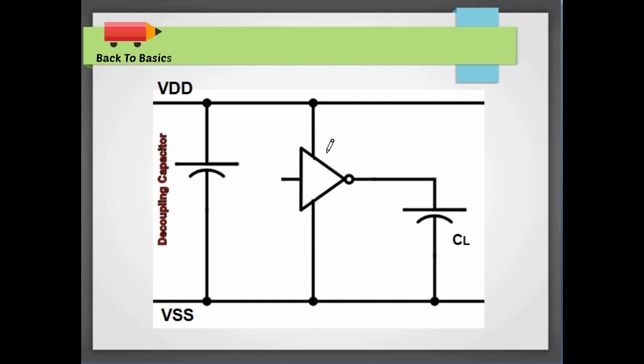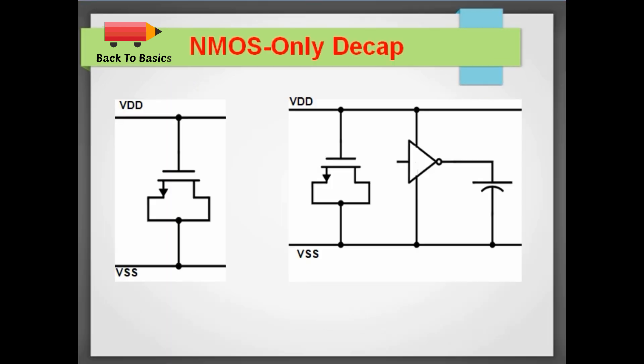So whenever these cells switch, decap cells start discharging themselves and provide the much needed instantaneous current to the cells and keep the power supply constant. There are many types of decap cells and in this video I am going to show you some of them.